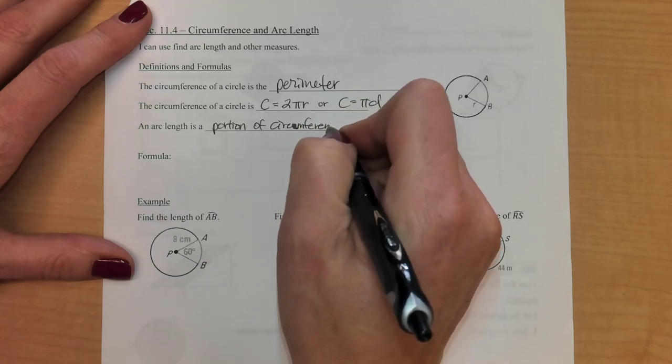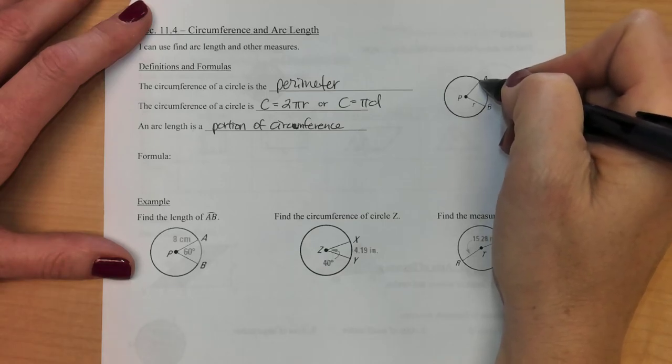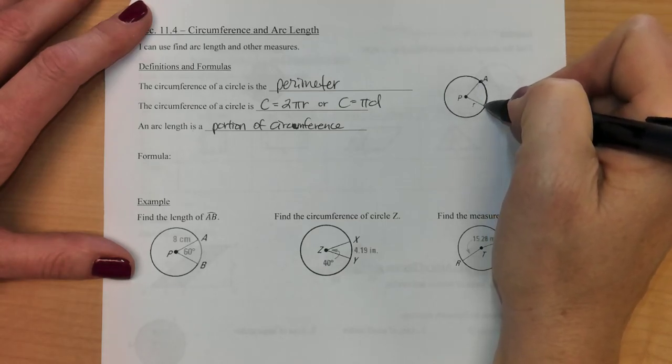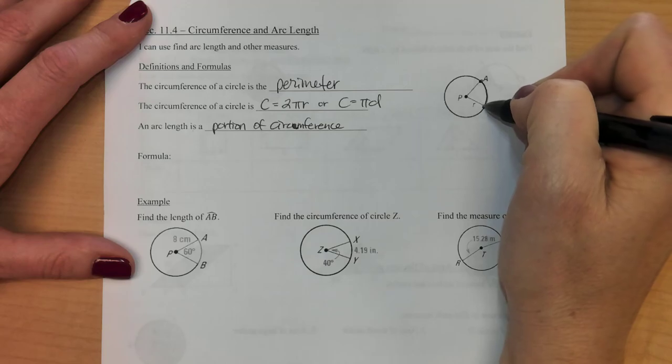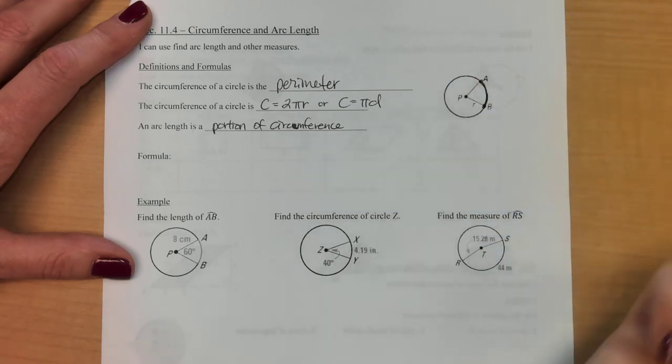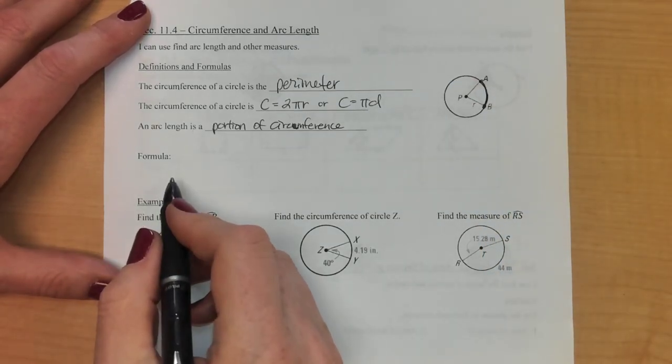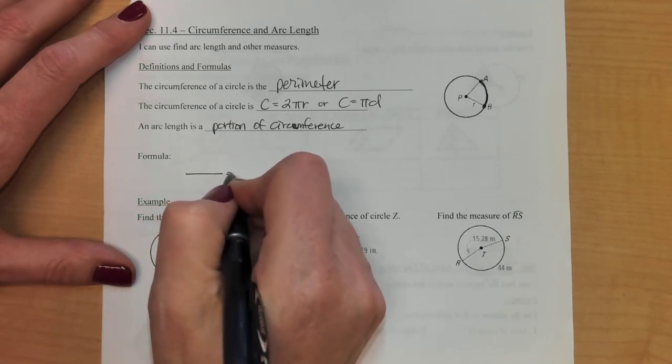When we're talking about arc length, we're talking about like how far is it to walk from A to B. So it's not a straight line, so I can't do anything triangular. It's this outside portion of the whole circumference. So I'm just talking about a chunk of it. And there's a formula we use and we set it up like a cross product.